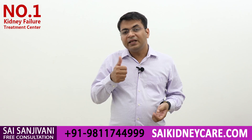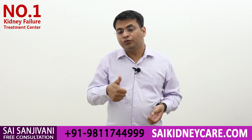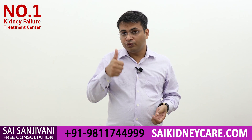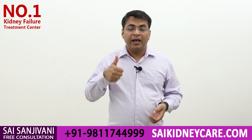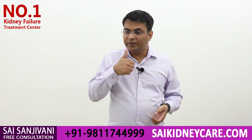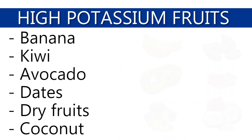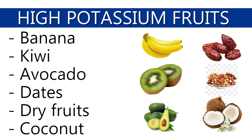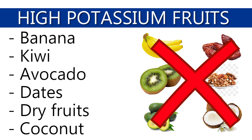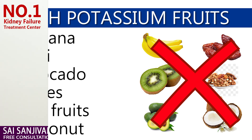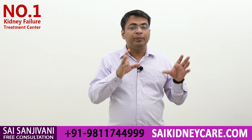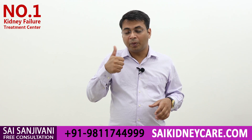Now let's move to fruits and see how fruits can help a patient control potassium levels. In the case of fruits, we have to avoid a few: banana, avocado, kiwi, dry fruits, dates, and coconut. These are the six items to be avoided in the fruit category.